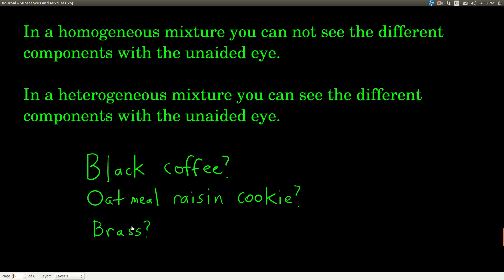What about an oatmeal raisin cookie? It's heterogeneous because you can see the raisins and the cookie and the different parts with your unaided eye. That's the distinguishing factor.